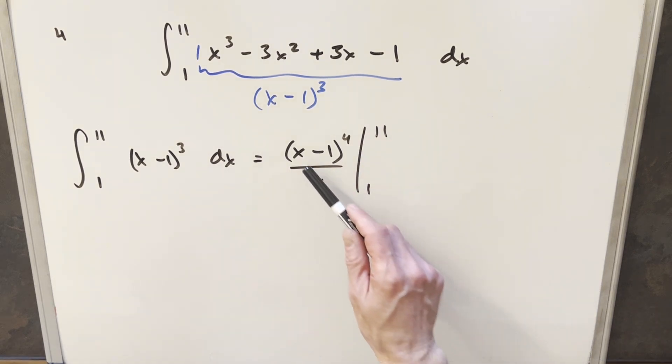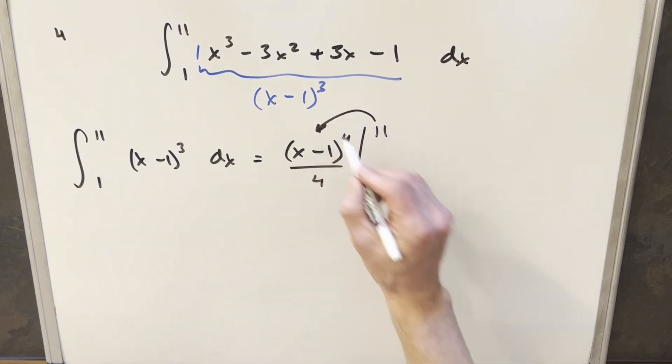But now notice when we evaluate at 1, this is going to be 0, and so that part's going to go away. So let's just evaluate this at 11.